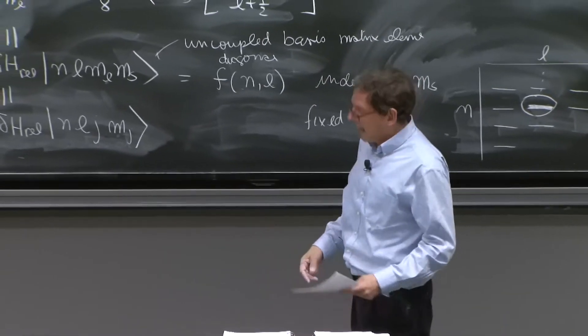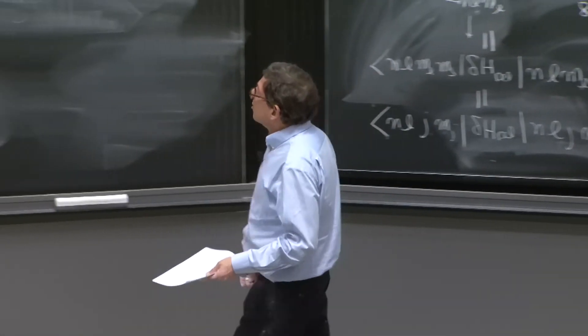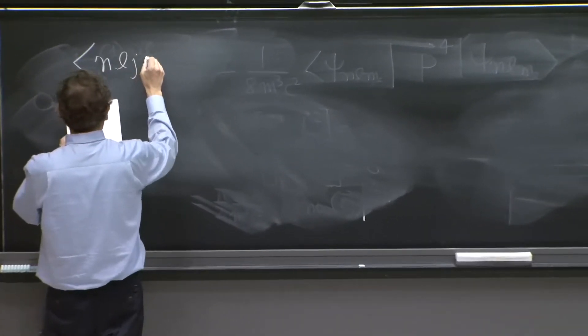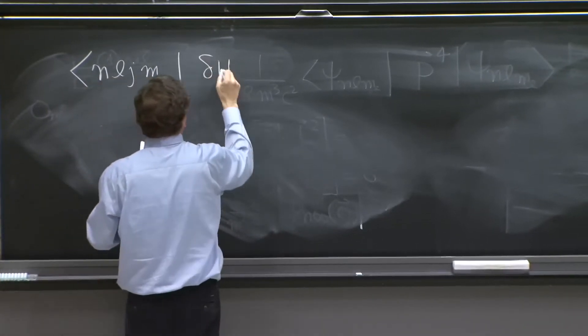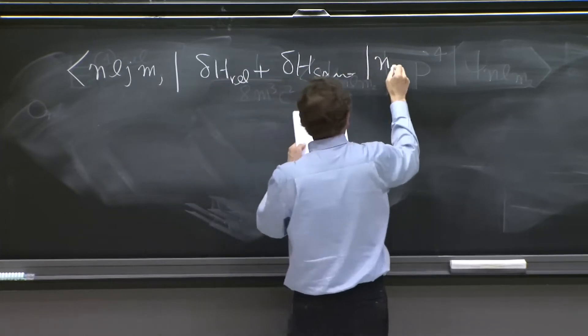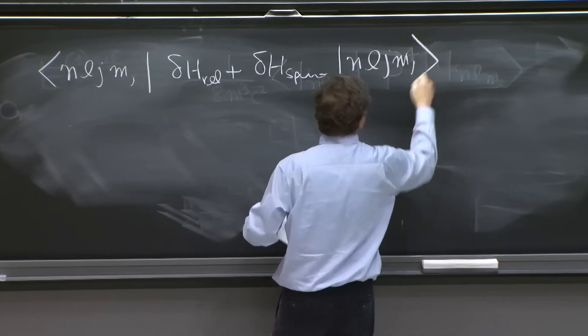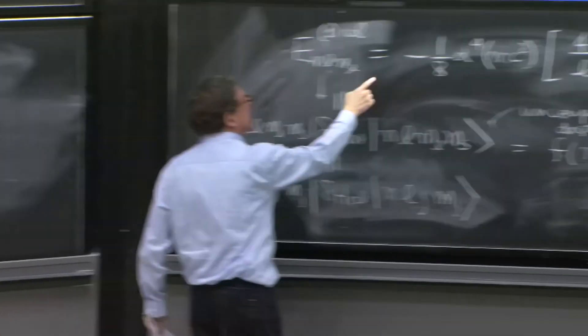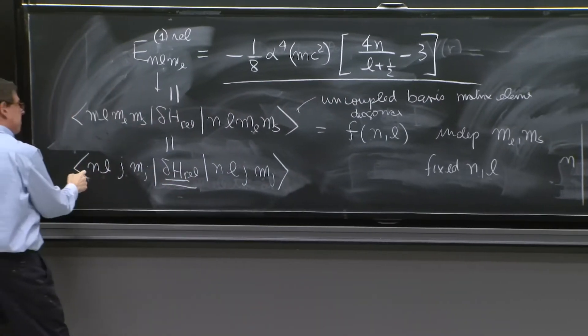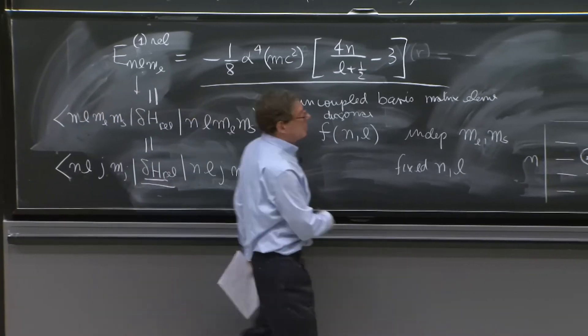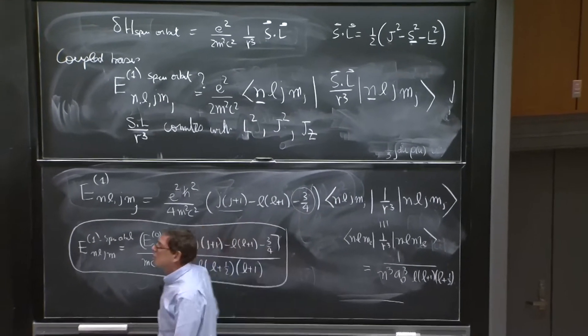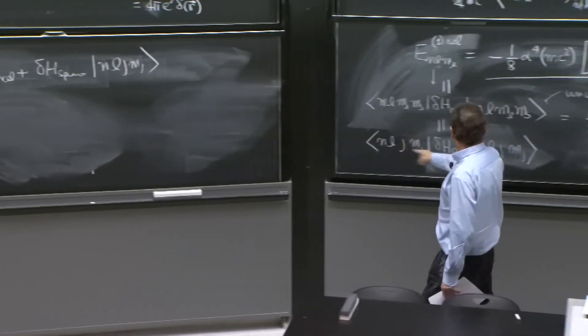But the end result is that we can combine it. And so the happy thing as well is that we now can do this, mj delta h relativistic plus delta h spin orbit and lj mj. Because whatever we calculated here was actually the same that h relativistic in the coupled basis. And anyway, the spin orbit, we use the coupled basis to get this number. So this thing, you can add the two results.